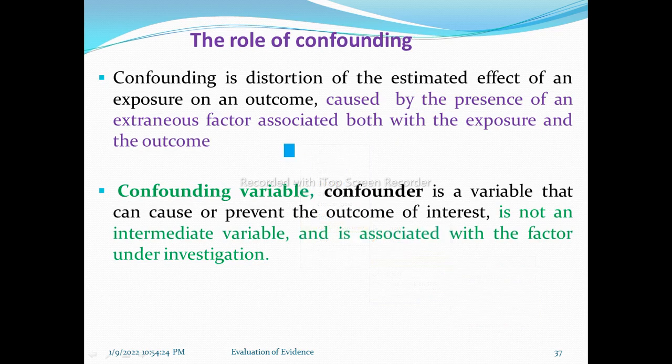What is confounding? Confounding is a distortion of the estimated effect of an exposure on an outcome, caused by the presence of an extraneous factor associated with both the exposure and the outcome. Due to the presence of this external factor, the estimated effect of exposure on outcome will be distorted — this is known as confounding.